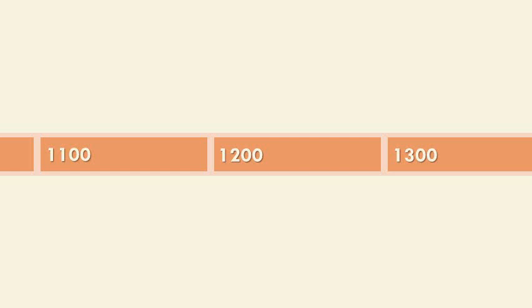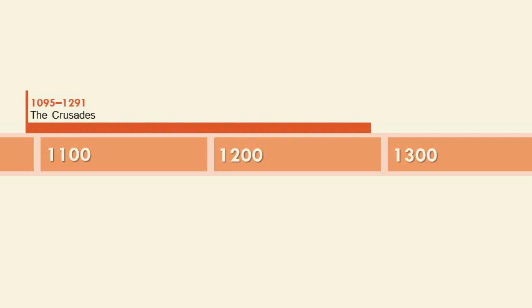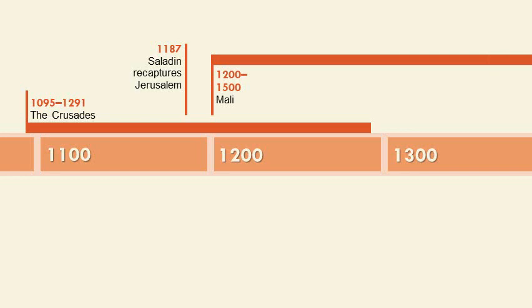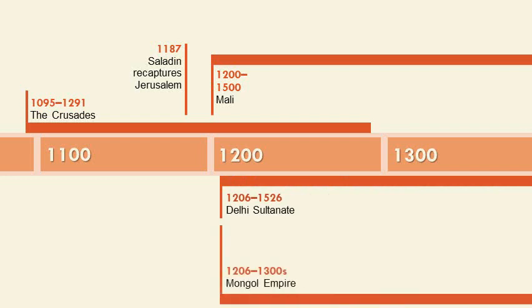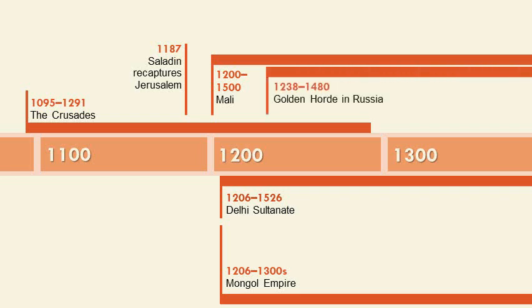As we focus on this timeline, it's going to be focused a lot on non-western sources. Obviously the Crusades are a western concept but tied to the east. Mali is Africa, Delhi is of course India, the Mongols is a Chinese phenomenon and east Asia, and the Golden Horde is going to be the Mongols coming into Russia.